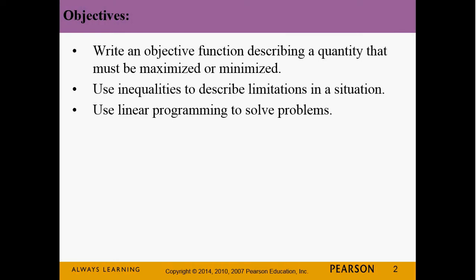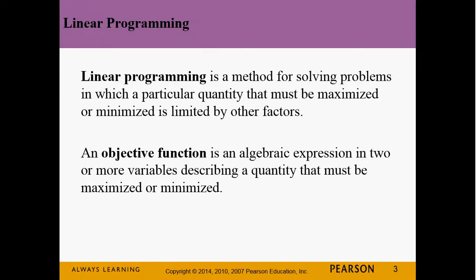All right, so we want to write an objective function, which is basically going to describe a quantity that needs to be maximized or minimized. Then we want to use inequalities to describe the limitations on the situation. And lastly, we want to use linear programming to solve the situation. Linear programming is just a method for solving problems where a particular quantity needs to be maximized or minimized.